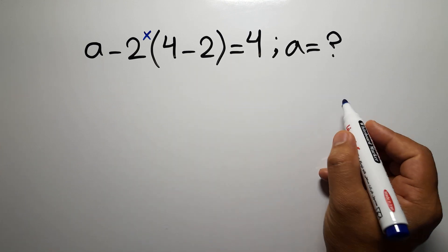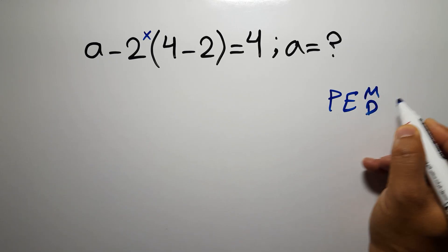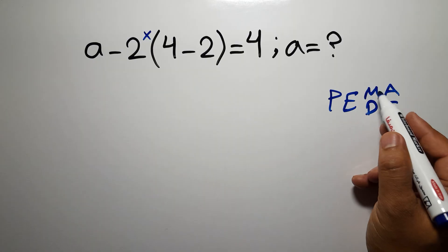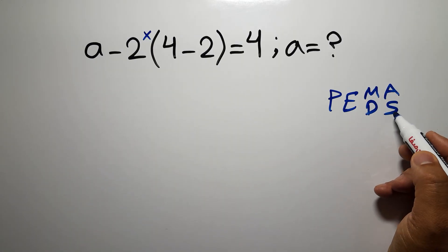According to the order of operations, which is PEMDAS: P stands for parentheses, E stands for exponents, M and D stands for multiplication and division, and A and S stands for addition and subtraction.